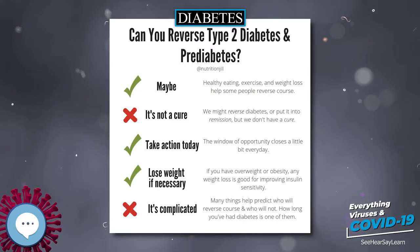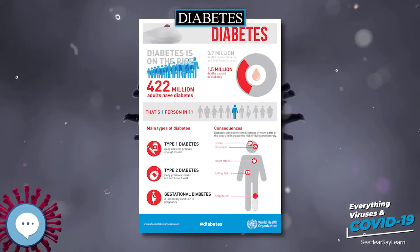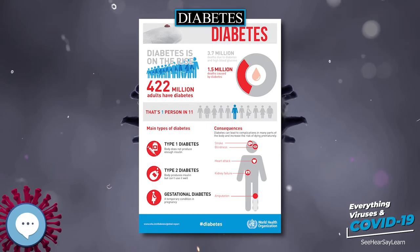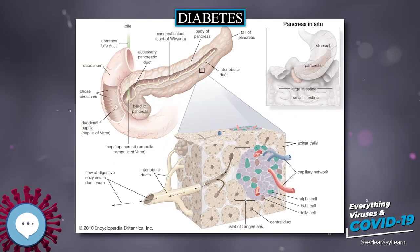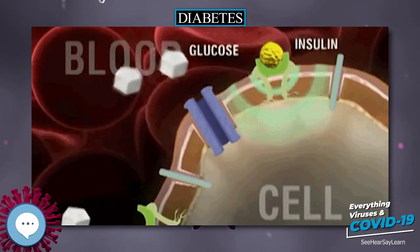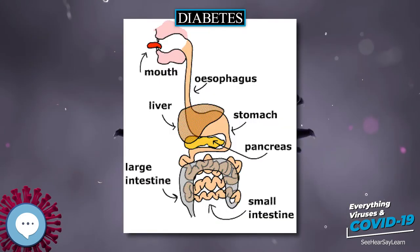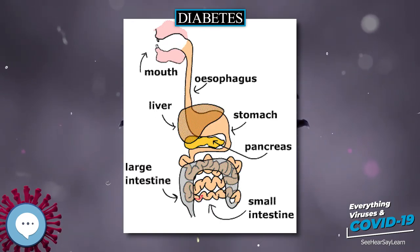All forms of diabetes increase the risk of long-term complications. These typically develop after many years — 10 to 20 — but may be the first symptom in those who have otherwise not received a diagnosis before that time. The major long-term complications relate to damage to blood vessels. Diabetes doubles the risk of cardiovascular disease and about 75% of deaths in people with diabetes are due to coronary artery disease. Other macrovascular diseases include stroke and peripheral artery disease.